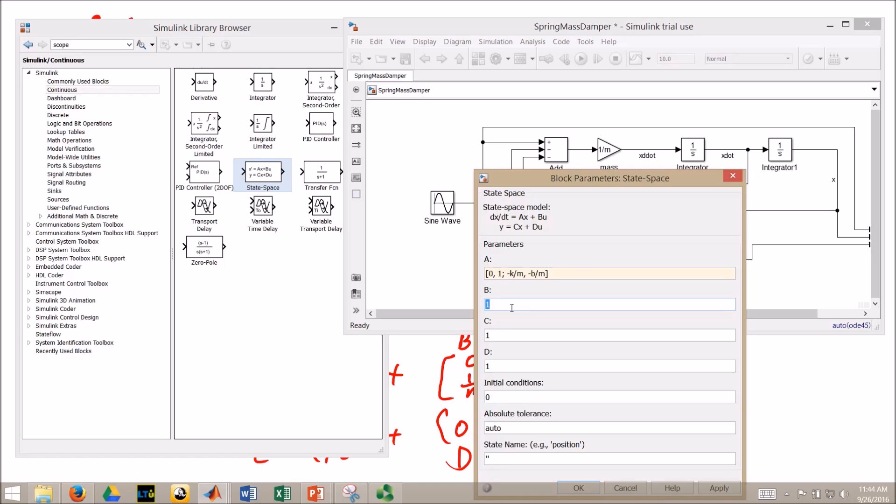My B matrix is 0, semicolon, 1. First row is 0, second row is 1. My C matrix is 1, 0, close bracket, and my D matrix is just plain 0, I guess I didn't need to put it in brackets. Initial conditions, we have the option for that, we don't need to do it, and of course, up here at the top, they show you the form of that model. Okay.